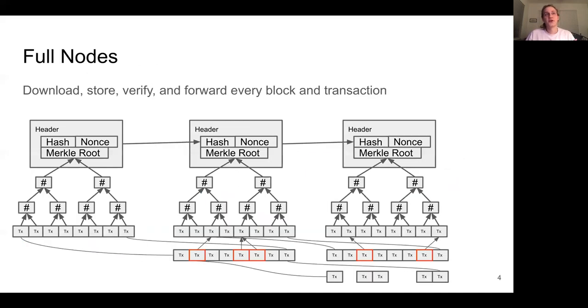Full nodes are nodes that download, store, verify, and forward every block and transaction made on the blockchain. As such, they have to store the full state. To be more efficient, they can forget about transactions that have been deleted, that's called being a pruned node, but at a minimum, they must store the transactions for all coins that might be spent in the future. And this amounts to multiple gigabytes of disk space.